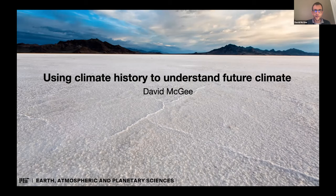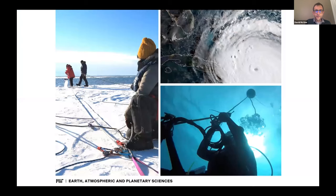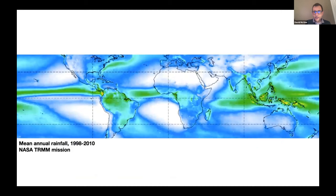In EAPS, or Course 12 as it's known, there's a huge amount of work being done to understand the path in front of us — to examine the stability of polar ice sheets, understand how hurricanes will respond in a warmer world, and examine the vulnerability of marine ecosystems to threshold-like changes. My group focuses on water availability, specifically in subtropical dry regions like the western United States, the central Andes, and northern and southern Africa.